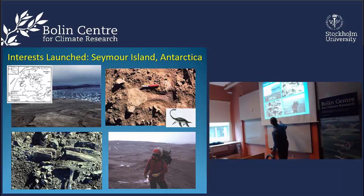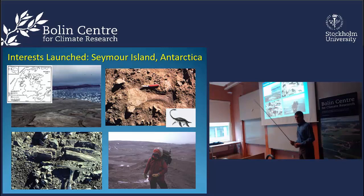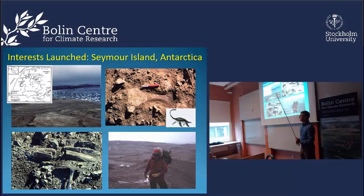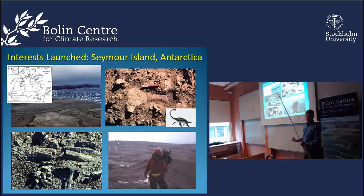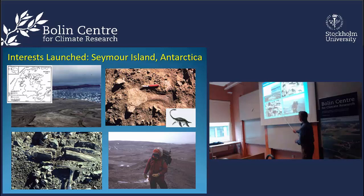The location where we worked is Seymour Island, in the Antarctic Peninsula at 65 degrees south. The Nordenskjold expedition visited in 1901 to 1903 — the Swedish North Polar expedition built their hut right there. They spent most of their time collecting from Seymour Island, and they went there because whalers brought back fossil wood and ammonites, evidence of a very different Earth. For two years, the Nordenskjold expedition collected from Seymour Island, and finding fossil wood in Antarctica was quite dramatic at the time.